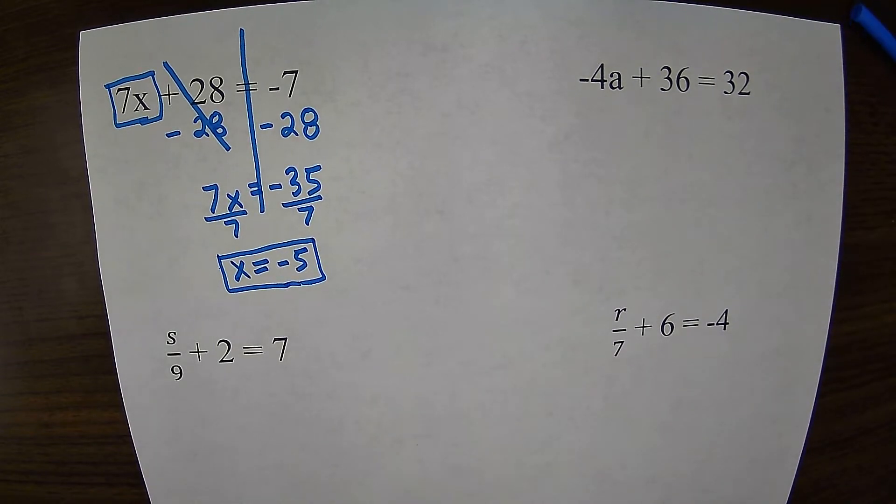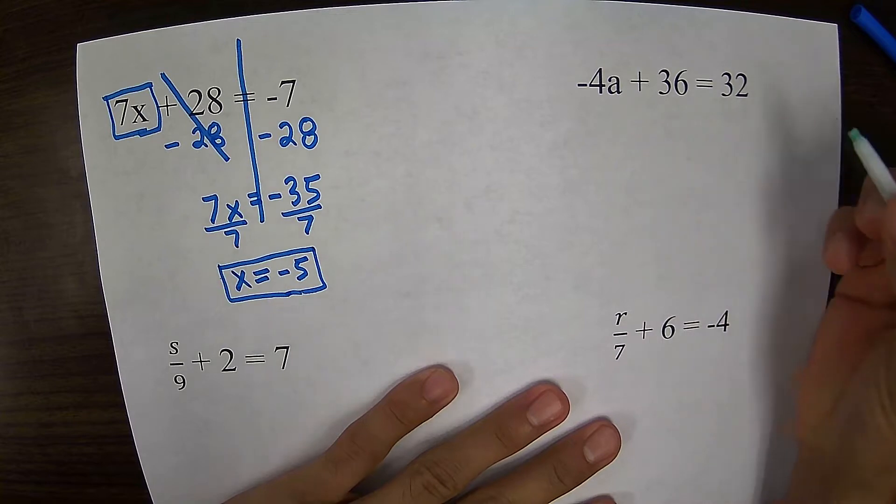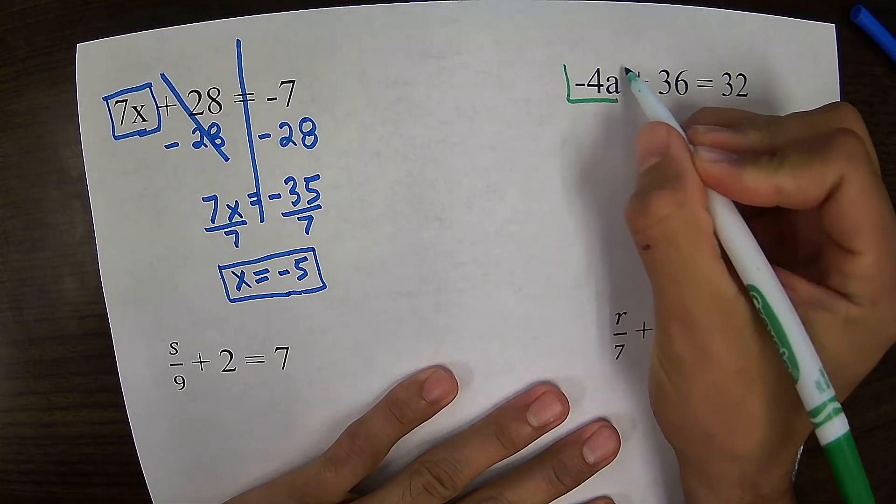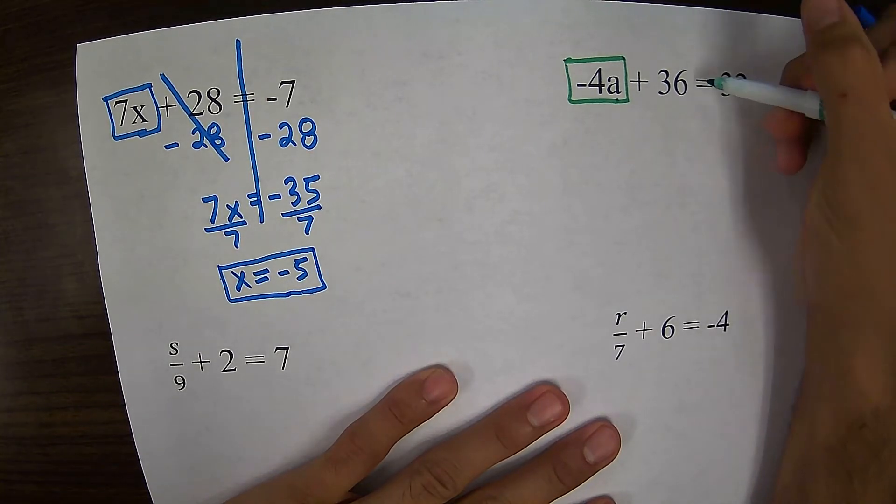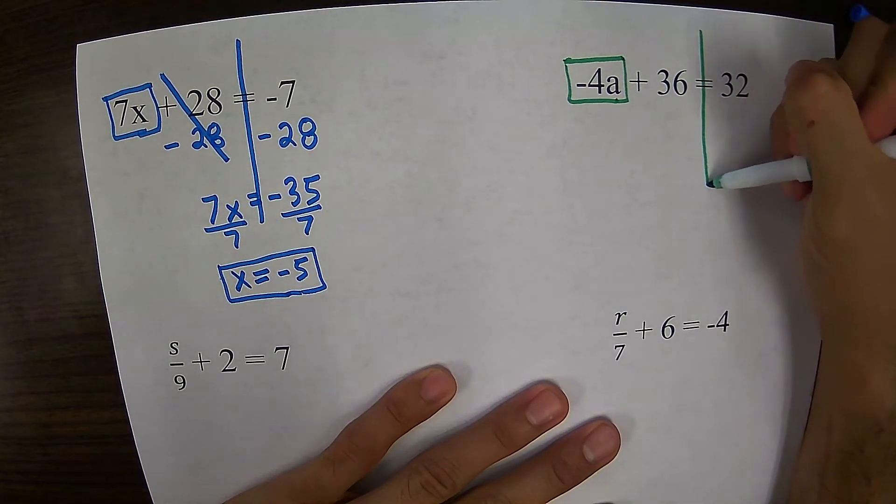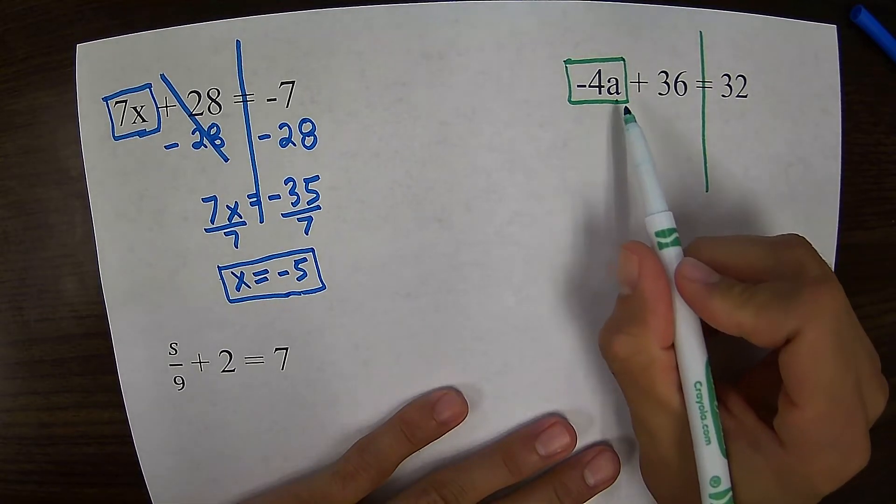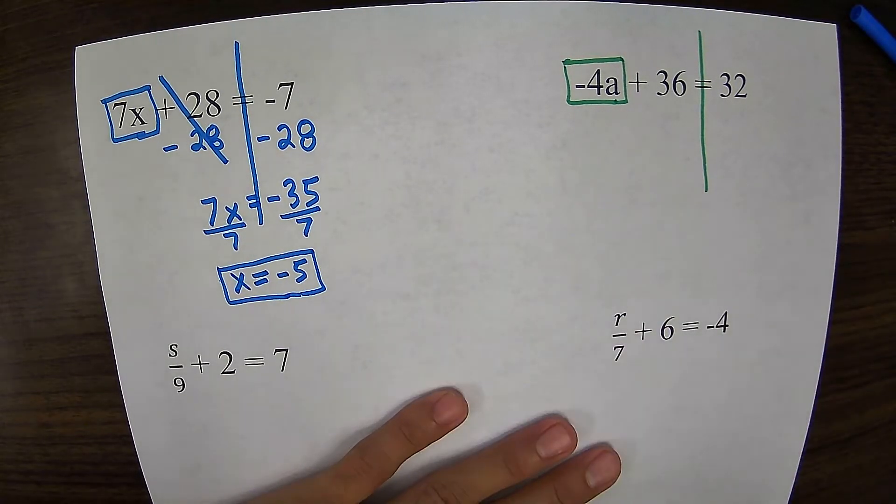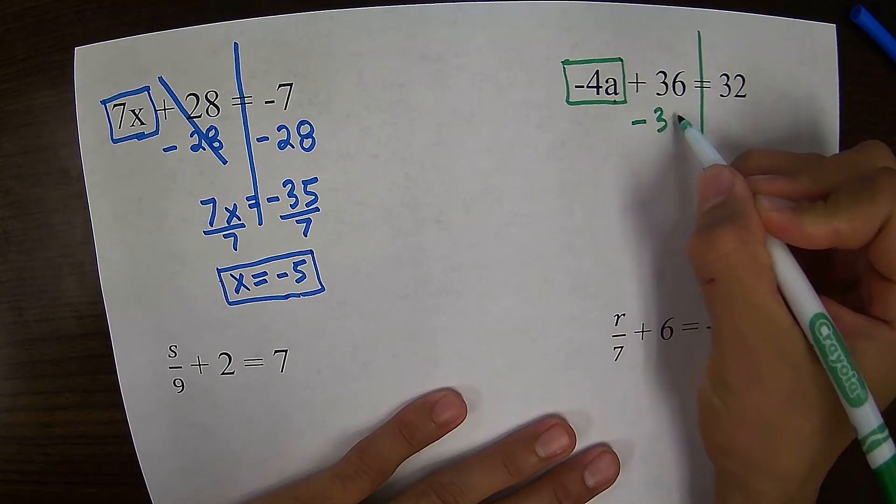Let's look at another example. Negative 4a plus 36 equals 32. In this example, my variable is negative. Still going to solve it the exact same way. I have negative 4a plus 36. I want to get negative 4a by itself, so I need to get rid of this plus 36 by subtracting 36.